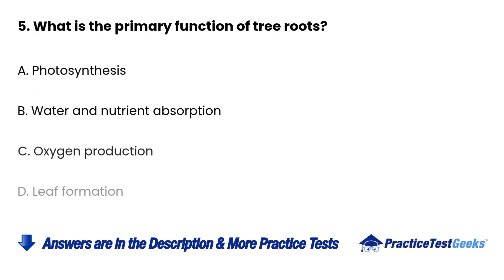Question 5: What is the primary function of tree roots? a. Photosynthesis. b. Water and nutrient absorption. c. Oxygen production. d. Leaf formation.